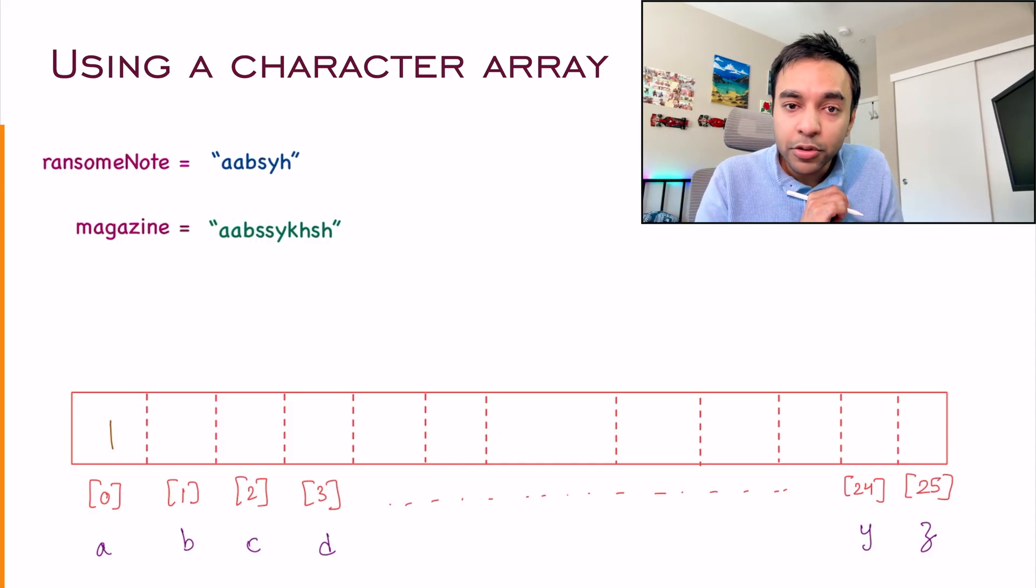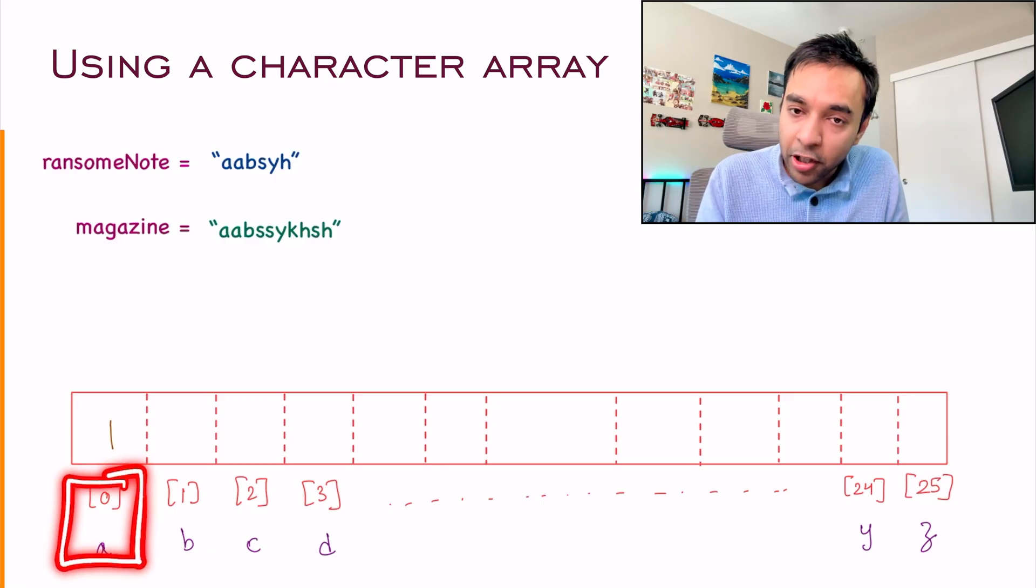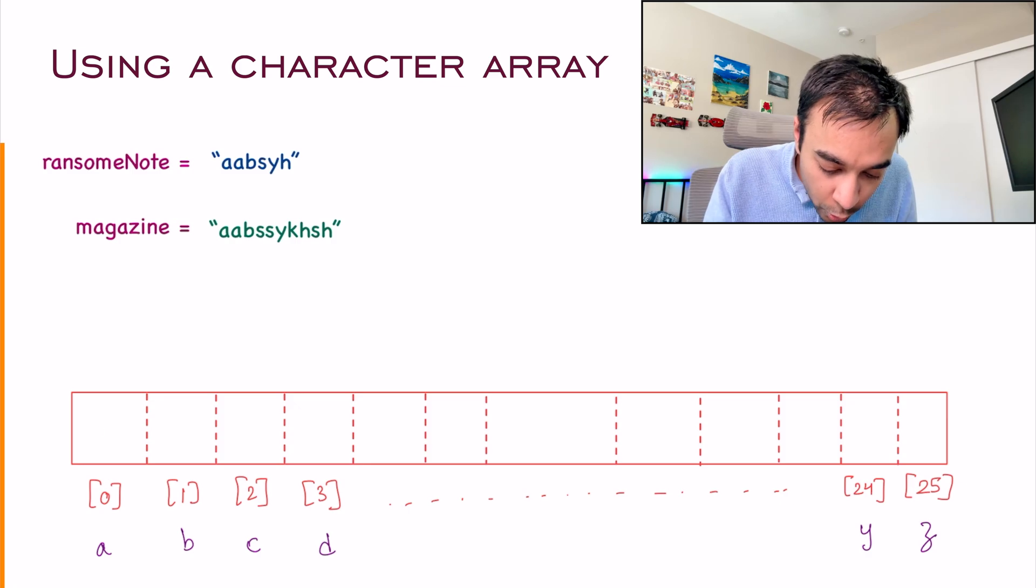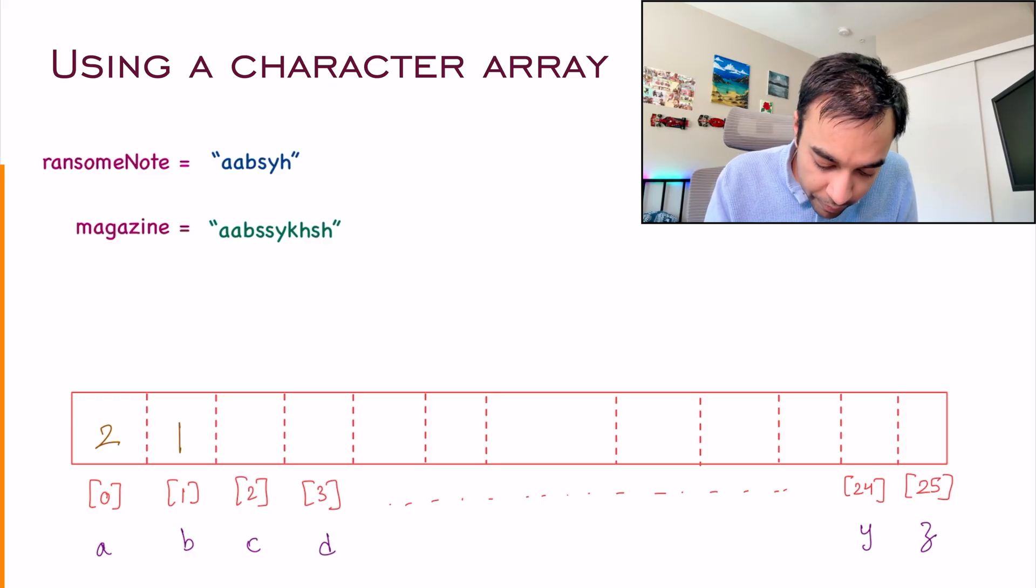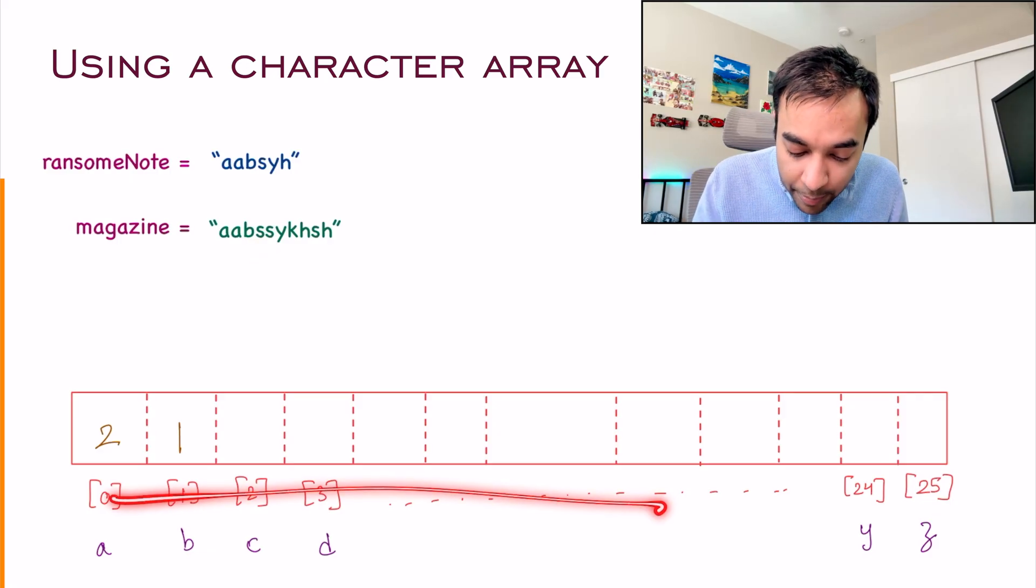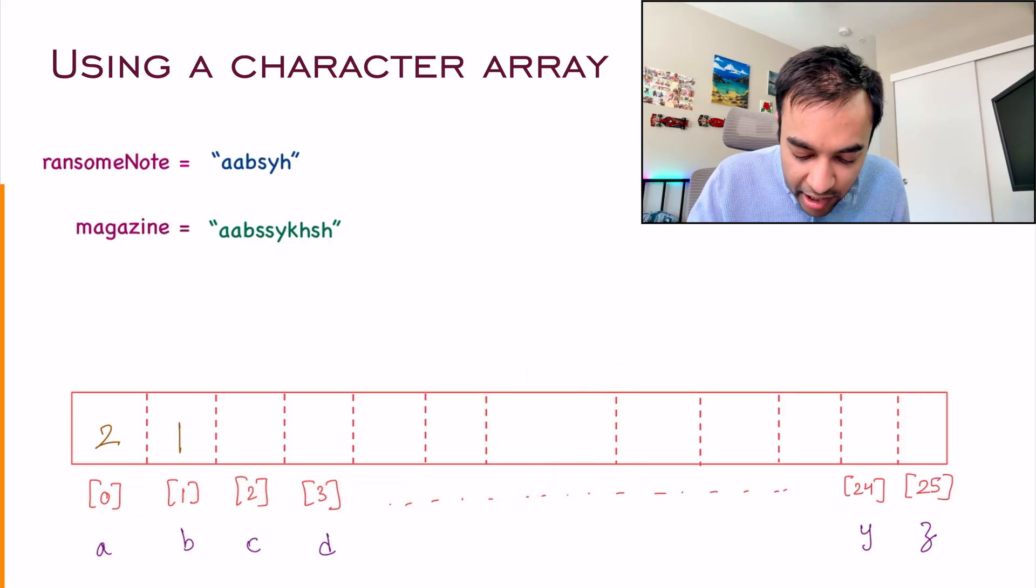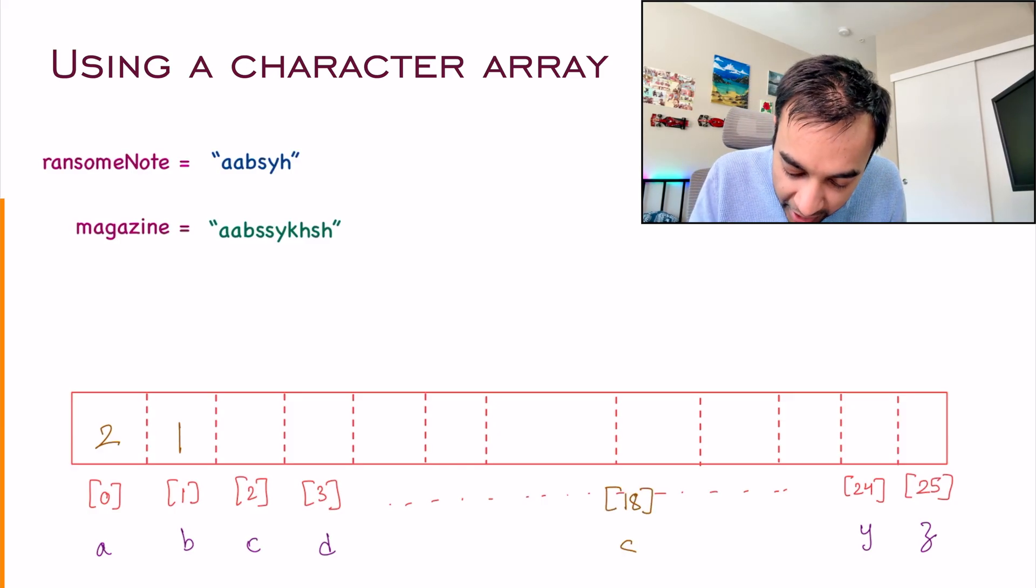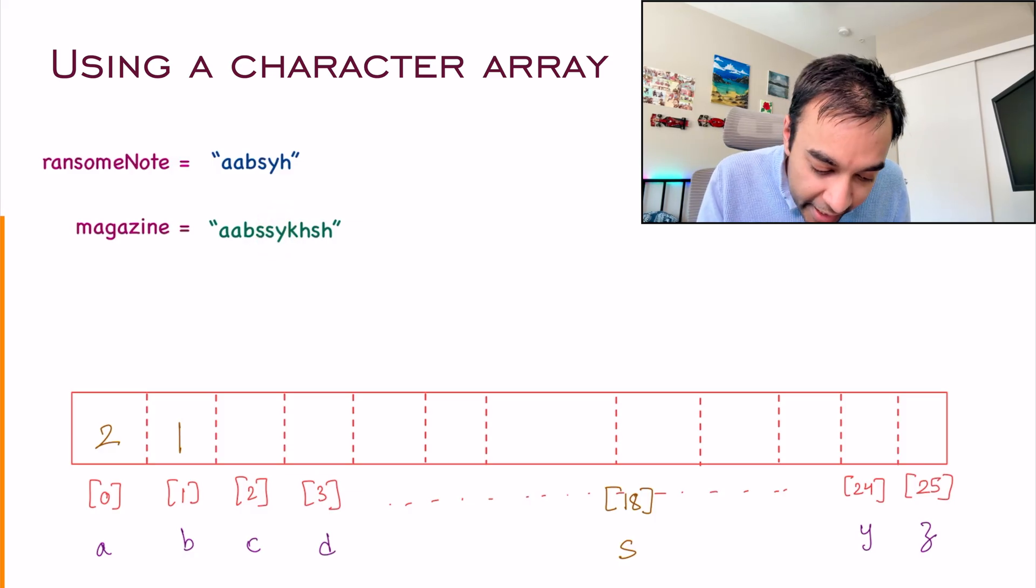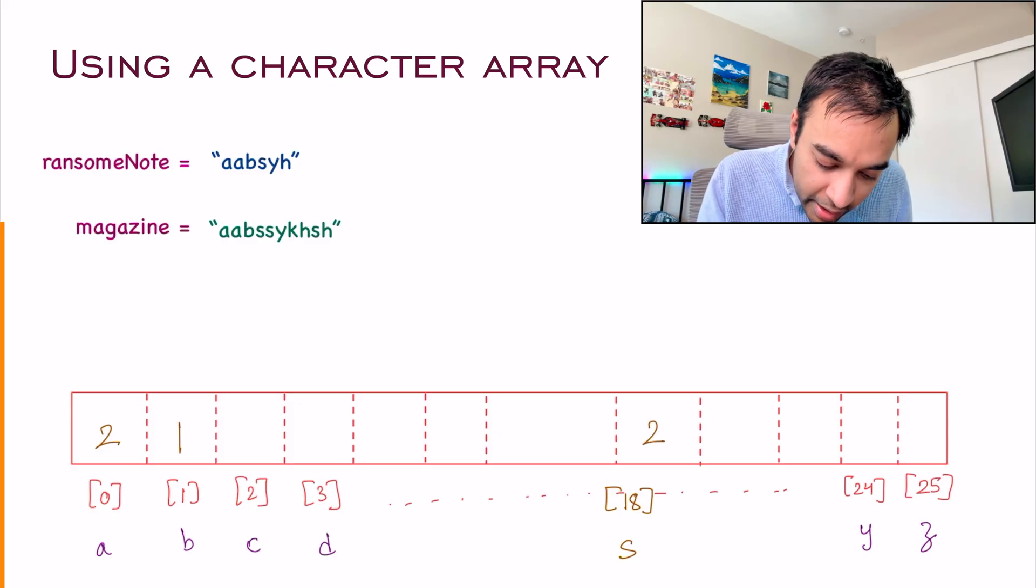I will iterate over each character in my magazine string. The first character I get is A and what does A map to? A maps to the zeroth index. I will go to this position and increment the count by 1. Instead of a 0, I now have 1. It means I have 1 occurrence of A. The next character is also A. Go to this position and increment the count. So this 1 changes to 2. What is the next character? It is B. Go to this position and increment the count. Initially it was 0 and now it becomes 1.